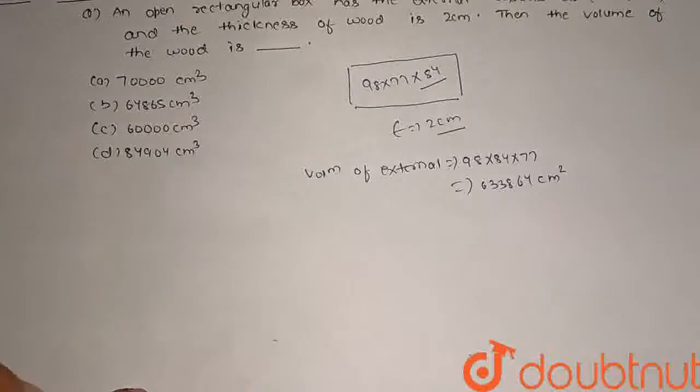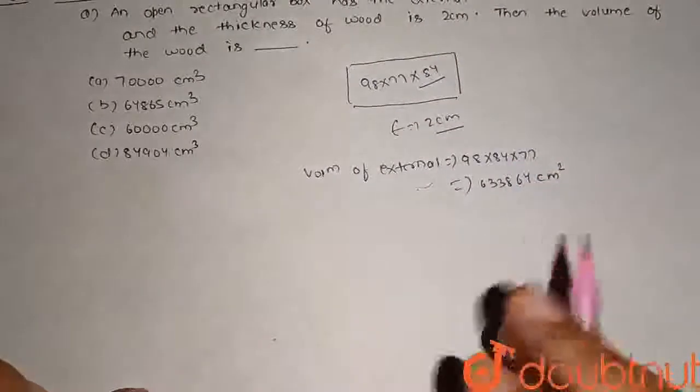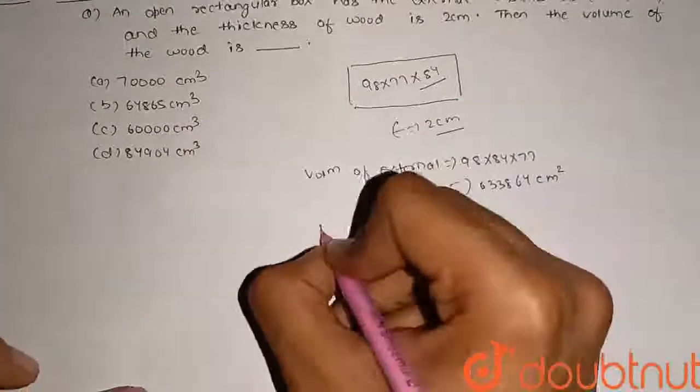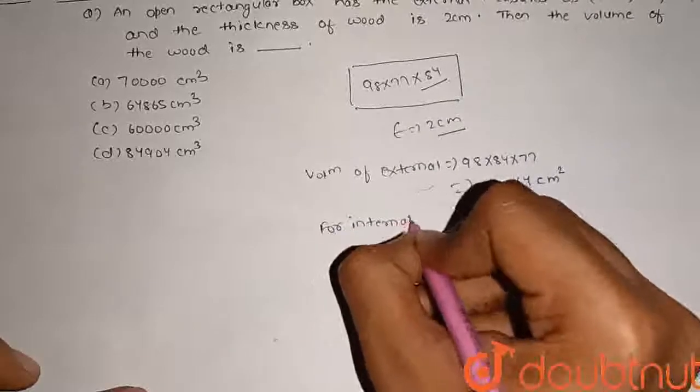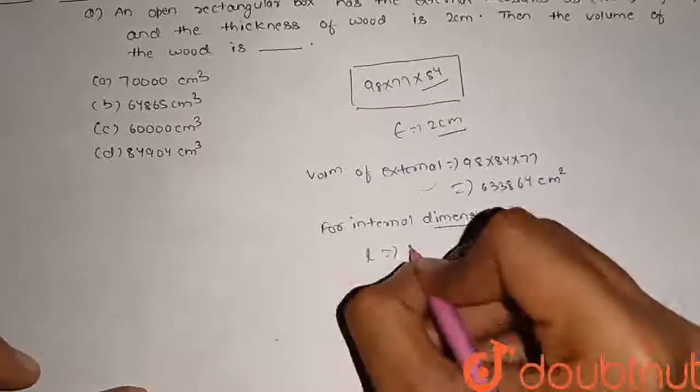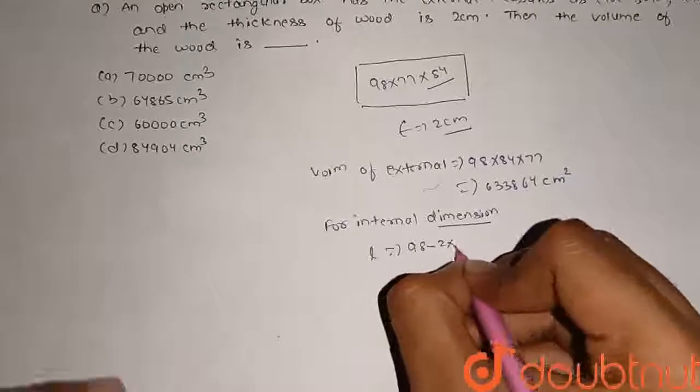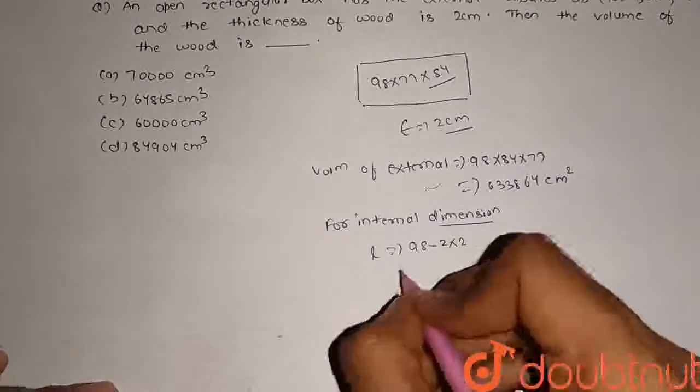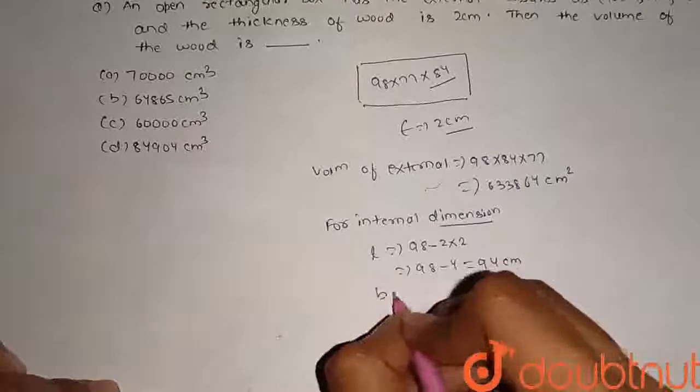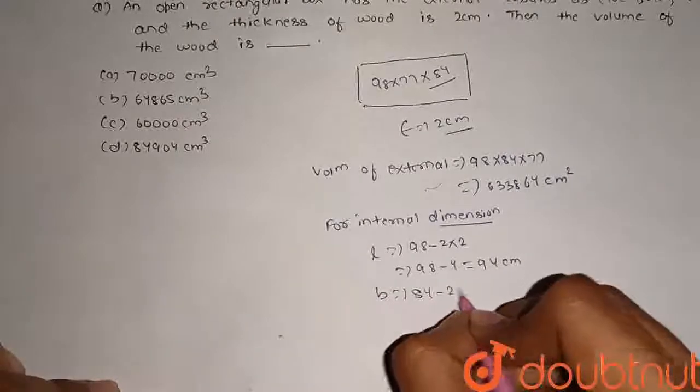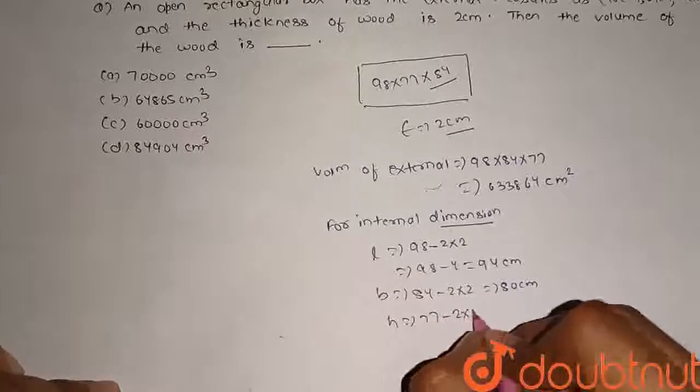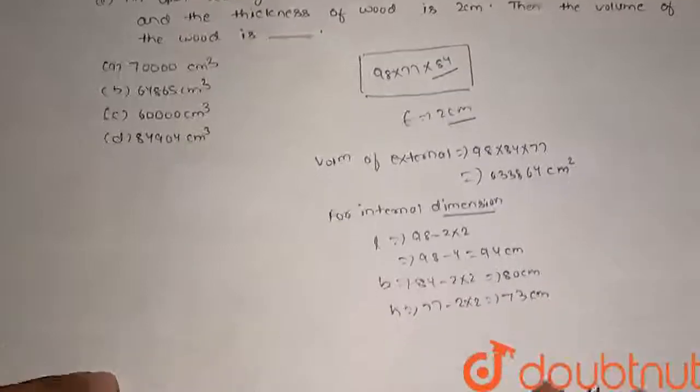For internal you have to minus this thickness 2 times, then you'll get internal measure. For internal dimension: length 98 minus 2 into 2 that is 94cm, breadth 84 minus 2 into 2 that is 80cm, and height 77 minus 2 into 2 that is 73cm. Now calculate its volume. Volume of internal: 94 into 80 into 73 that is 548,960 cm³.